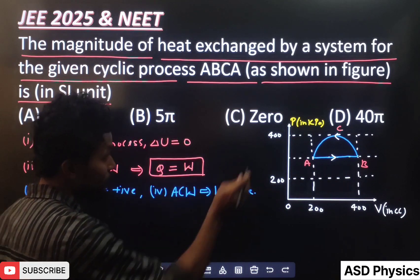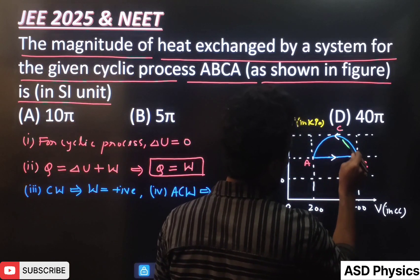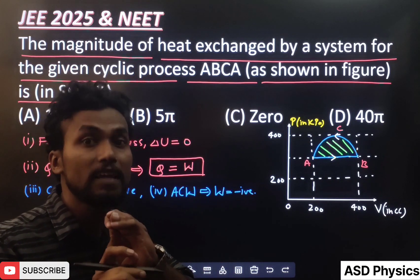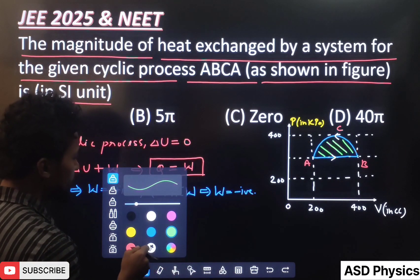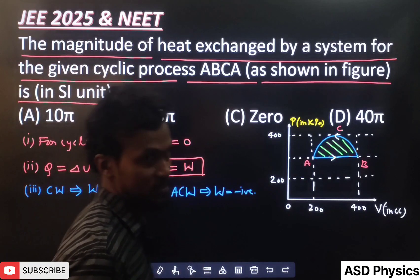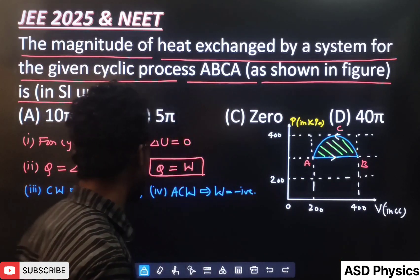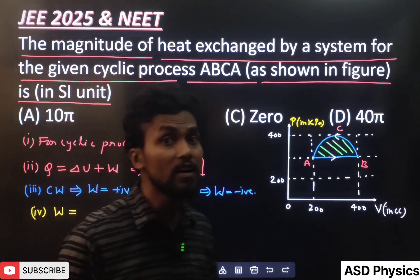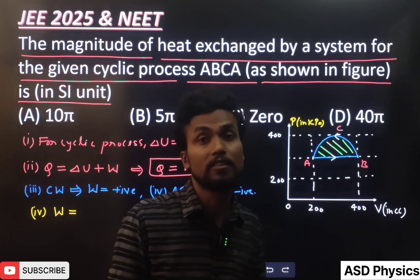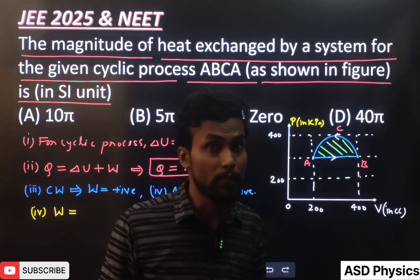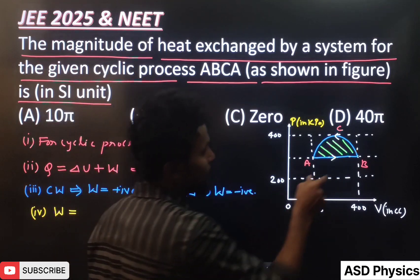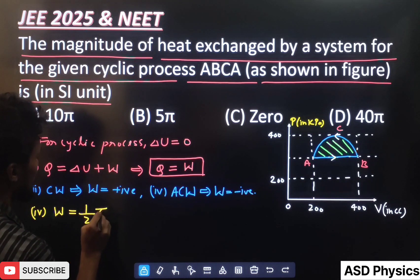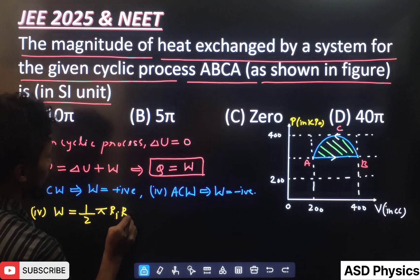For this cyclic process we have to calculate the area under the curve, and at the end we will put a minus sign because it is anticlockwise. You can see it looks like a semicircle. For the general case, the area of a semicircle is half pi r1 r2, where r1 and r2 are the two semi-axis radii.